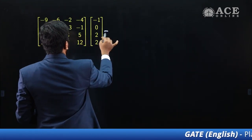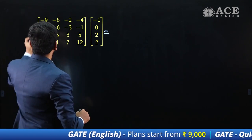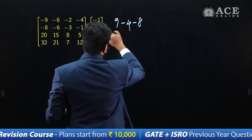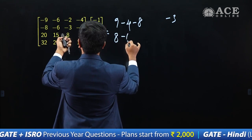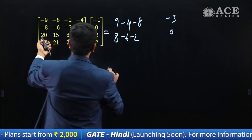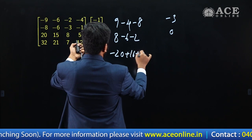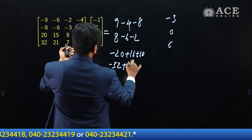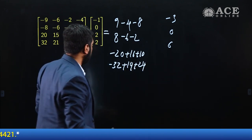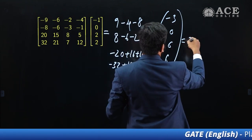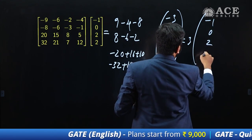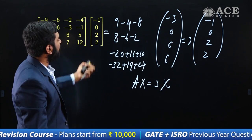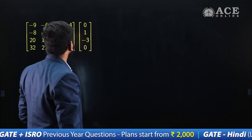Option C: multiplying A by the vector [−1, 0, 2, 2]. Computing each row: [9−4−8+9 → −3, 8−6−2 → 0, −20+16+10 → 6, −32+14+24 → 6]. Taking out common factor 3 gives [−1, 0, 2, 2] — the same vector. So AX = 3X, confirming option C is an eigenvector with eigenvalue 3.